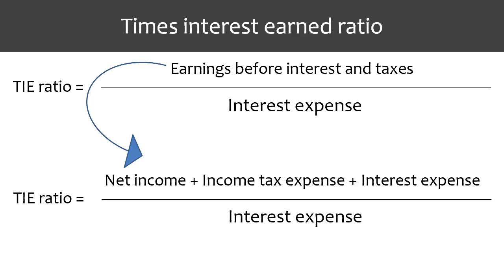The times interest earned ratio is calculated by taking earnings before interest and taxes divided by interest expense. Earnings before interest and taxes is net income plus income tax expense plus interest expense.